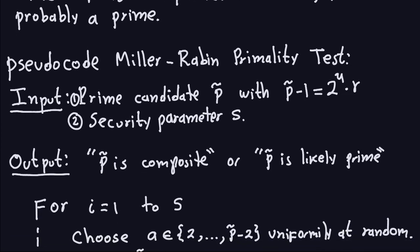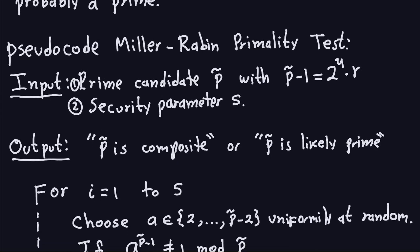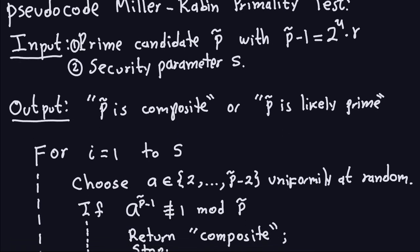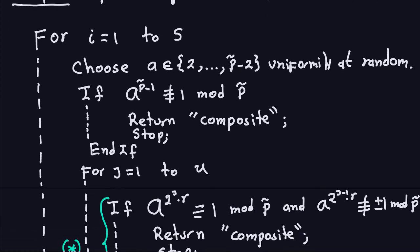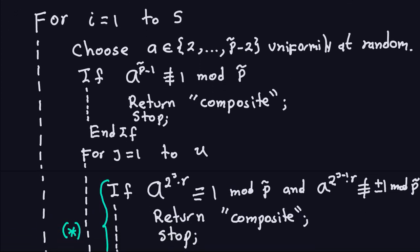The output is either that P-hat is composite or that P-hat is likely prime. Looking at the pseudo-code, for i equals 1 to S — that outer for-loop is the number of A's we're going to choose to try the theorem. In the second line, we choose an A uniformly at random between 2 and P-hat minus 2.